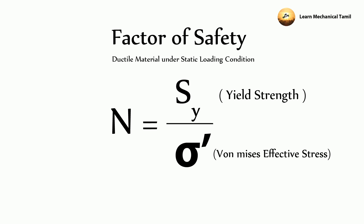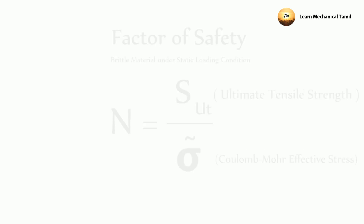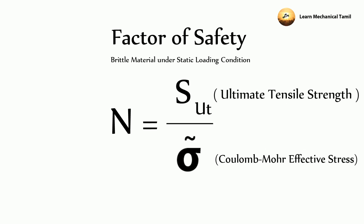The yield strength is the point at which the material will start to deform. If we look at brittle materials, we calculate the ultimate tensile strength rather than the yield strength.